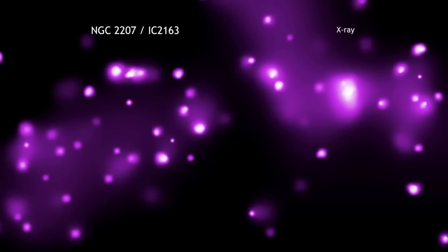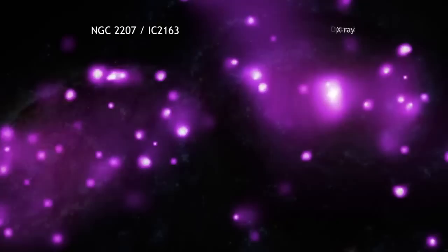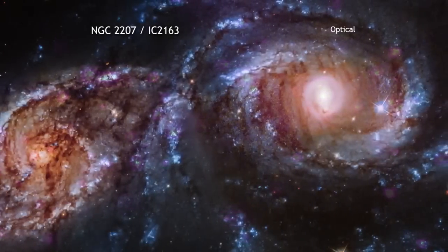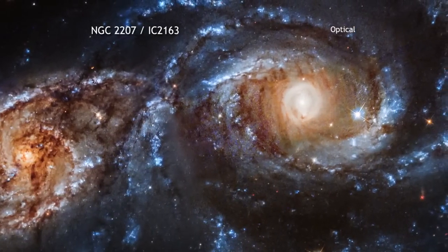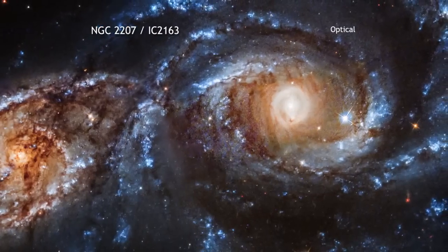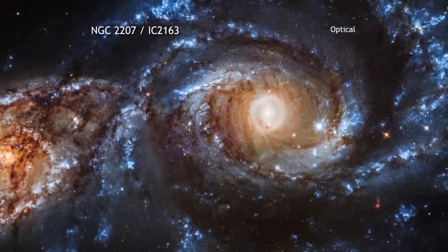As in our Milky Way galaxy, NGC 2207 and IC 2163 are sprinkled with many systems known as X-ray binaries, which consist of a star in a tight orbit around either a neutron star or a stellar-mass black hole.